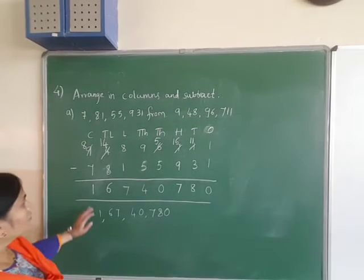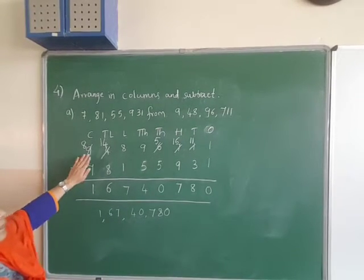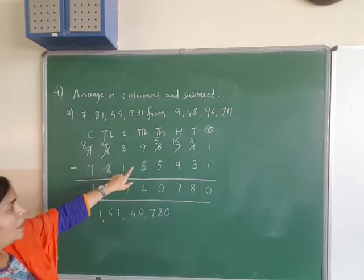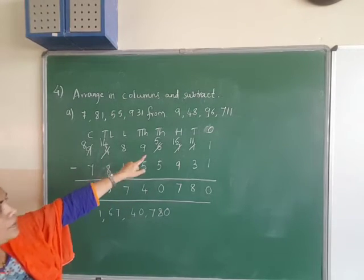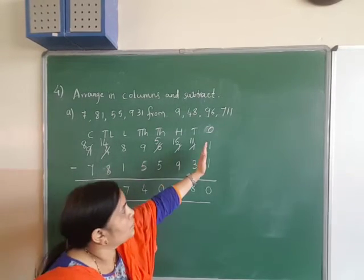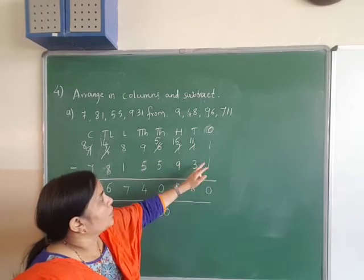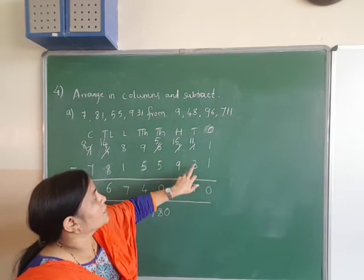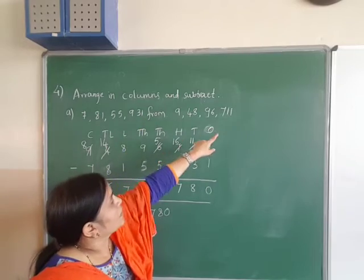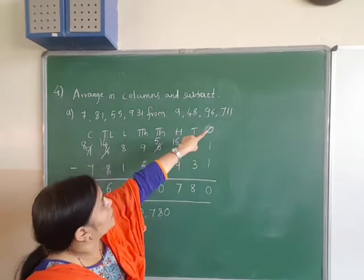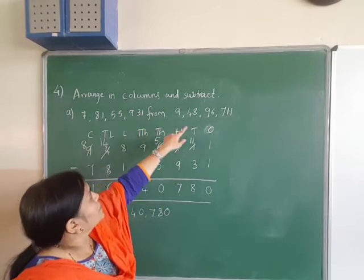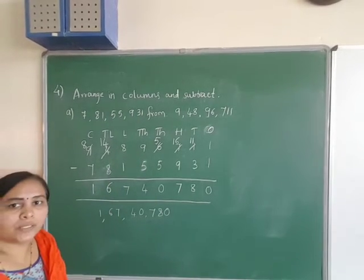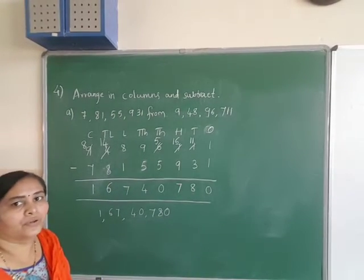So what we have to do: place according to the place value chart and subtract column-wise — ones place, tens place, and so on. According to place value, arrange and subtract.